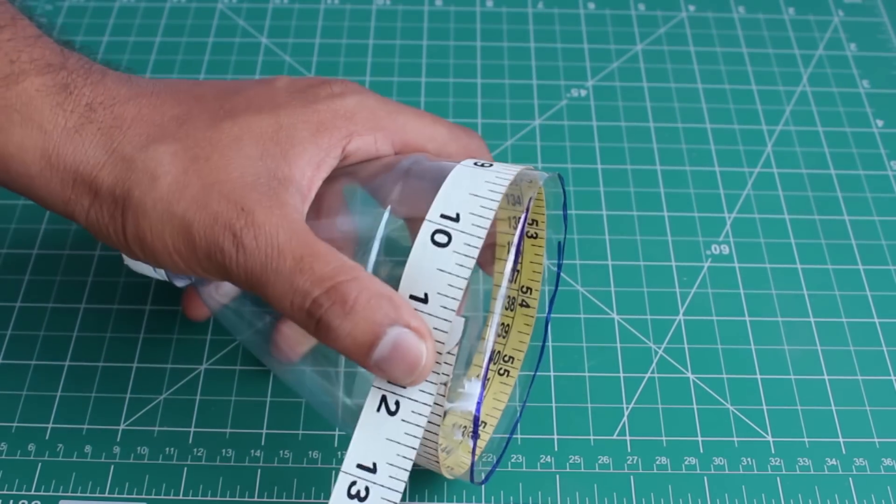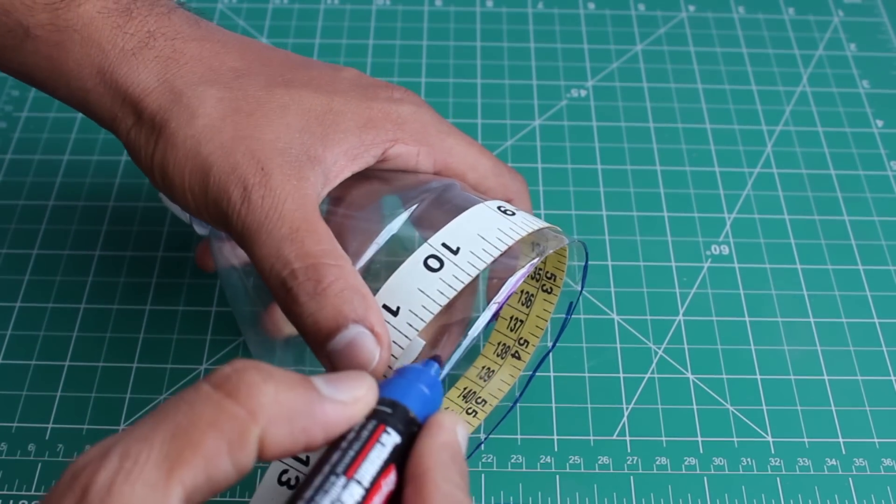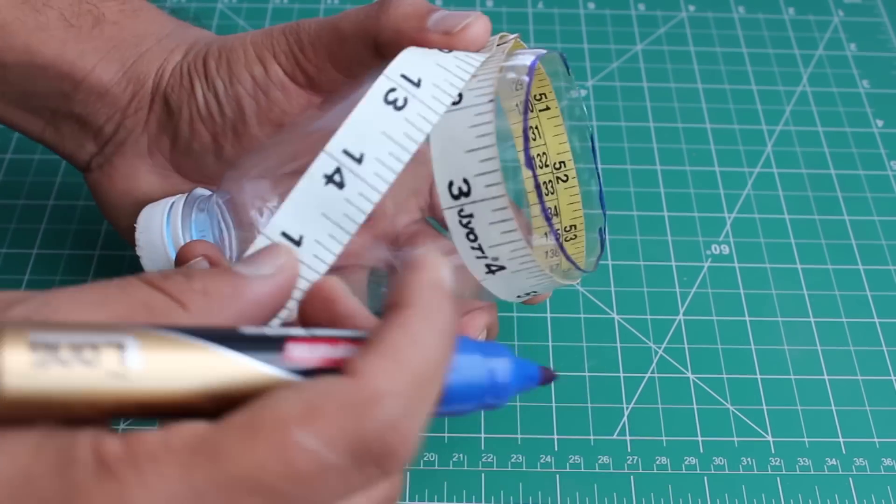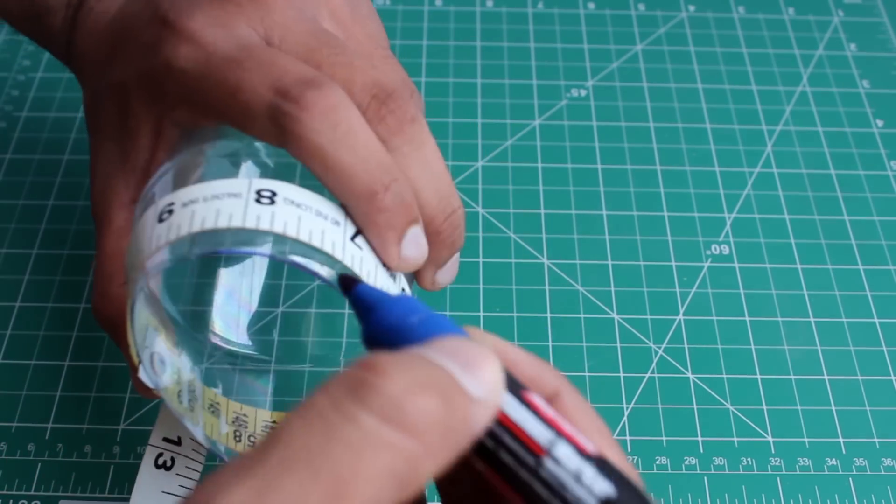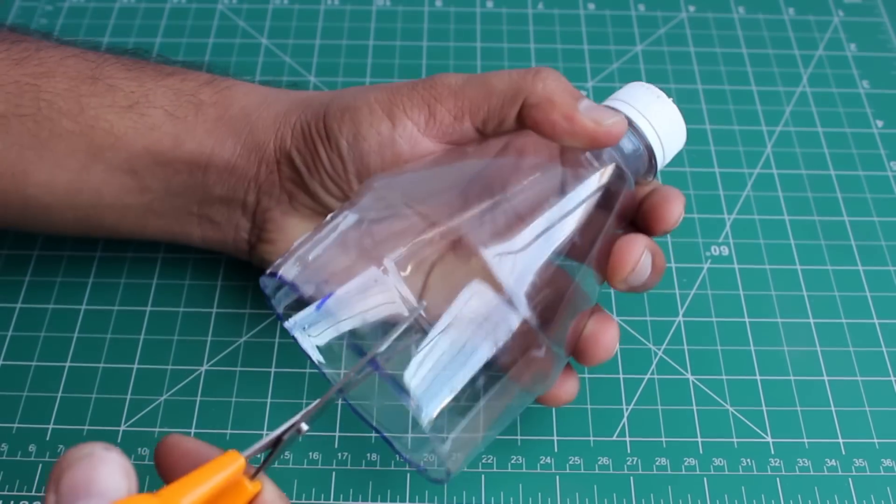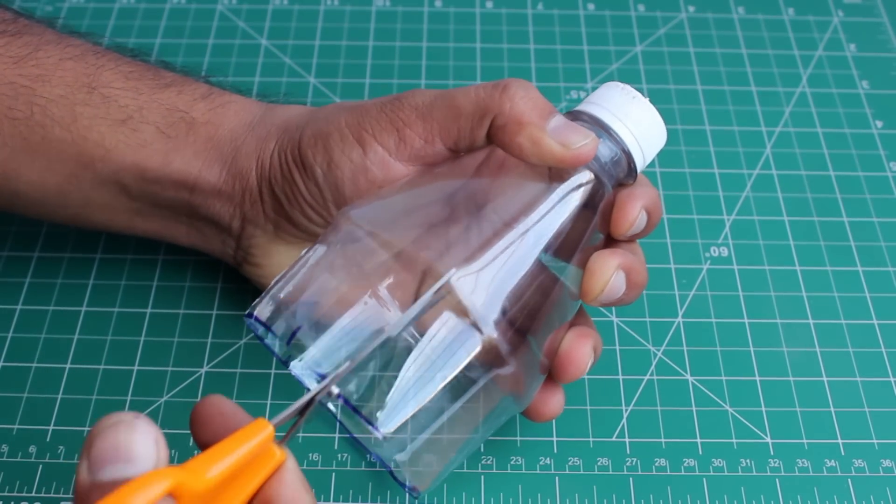By using the tape I measured the outer surface of the bottle - it's about 11 inches. So for cutting three wings of the fan I made three markings, each at 3.6 inches. Placing the marked portion in the center, cut the three wings of the fan.